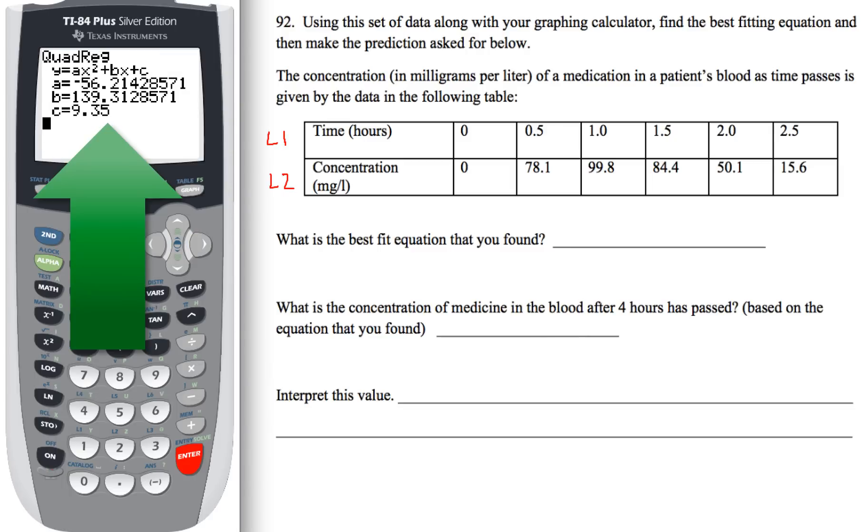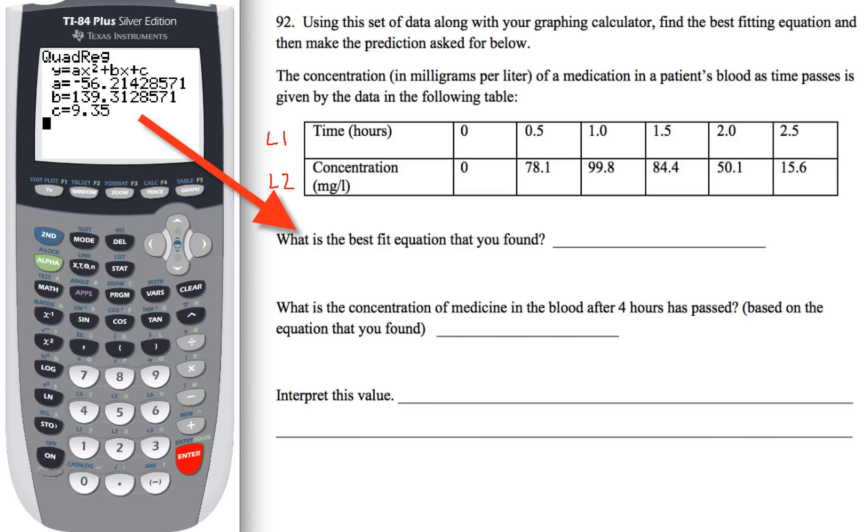When we did that quadratic regression, we got three different values for a, b, and c. What the calculator just did for us, thank you very much, is it gave us the best fit equation for this problem. What you want to do is take those values, a, b, and c, and write them in next to the x squared, the x, and the c appropriately for that. When you write your actual equation, some teachers will have you go one decimal place, some will go two. I know in calculus, the requirement there is that you have three decimal point accuracy. We're going to go out to three decimal places for a and b. Go ahead and write that in for the first question. What's the best fit equation that you found?